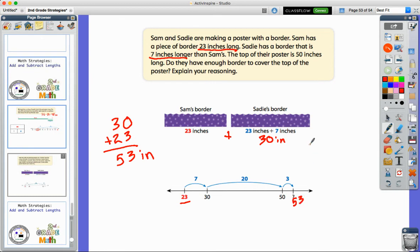So the open number line shows us that we were right. We had 53 inches, which means yes, we would have enough border for the poster.